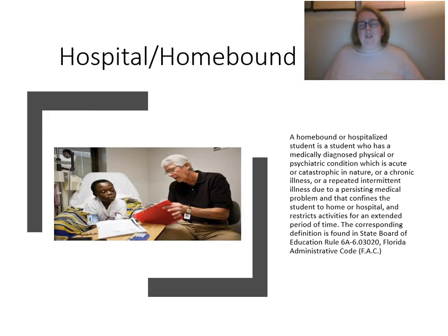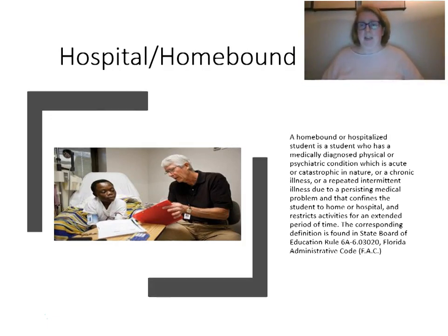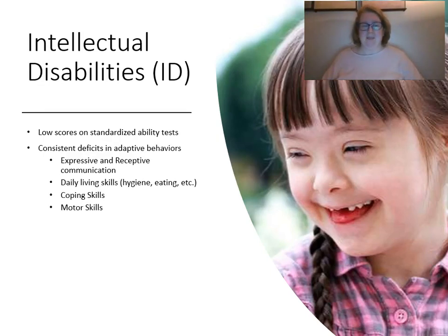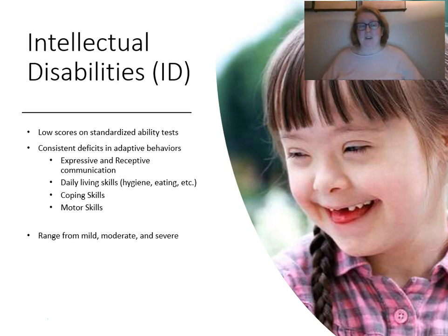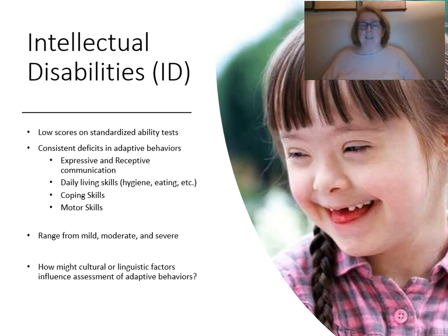Hospital homebound students have an illness, disease, or psychiatric condition causing them to be educated outside the school setting — at home or in a hospital. As the teacher, you may provide assessments or instruction to be delivered by someone else, or the student may be fully outside your instruction. Intellectual disabilities are characterized by low scores on standardized ability tests and may include students with Down syndrome or fetal alcohol syndrome. These range from mild — where a student may be in your classroom with an aide — to severe, where a student may be in a self-contained classroom working on daily living skills.